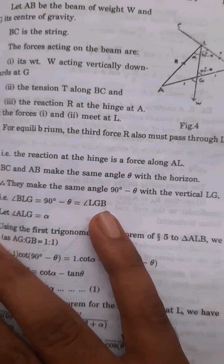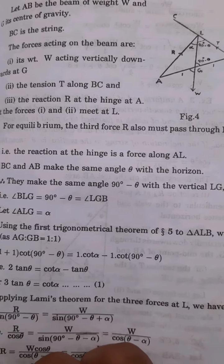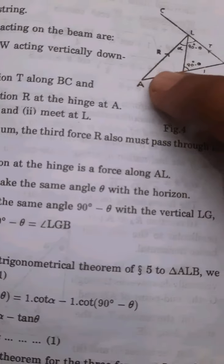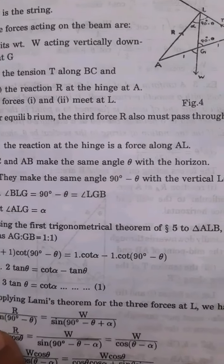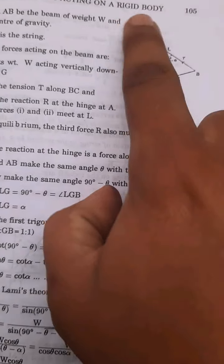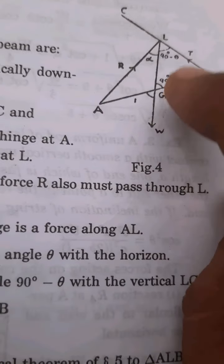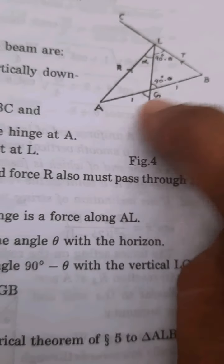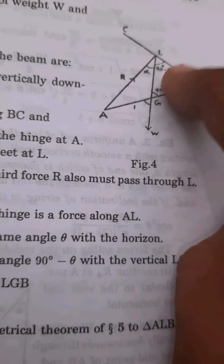The weight W acts vertically downwards, and the three forces meet at point L for equilibrium. The third force also passes through L. The reaction at the hinge is a force along AL. BC and AB make the same angle theta with the horizon. Angle BLG is 90 minus theta, and angle LG to AB is also 90 minus theta.